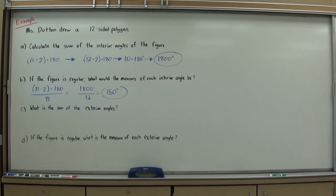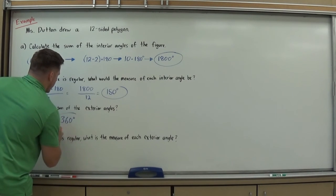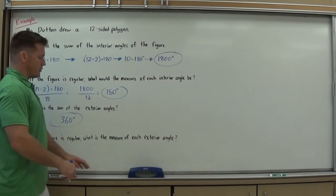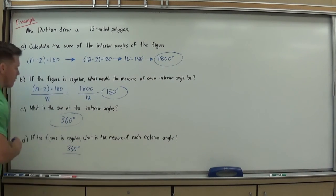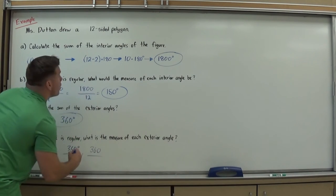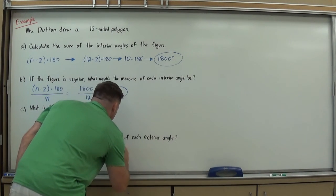Moving on: what is the sum of the exterior angles? You could draw the 12-sided shape, find each interior angle, then use linear pairs to find the exterior angle — but you can just remember that the sum is always 360 degrees for any polygon. Which means if it's a regular shape with all sides equal and I want to find the measure of each individual exterior angle, it's just 360 ÷ 12, which turns out to be 30 degrees.